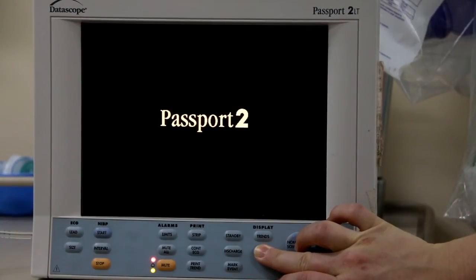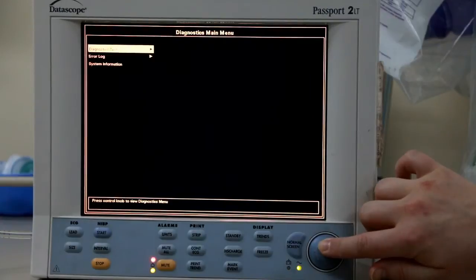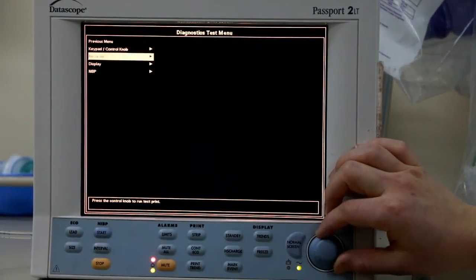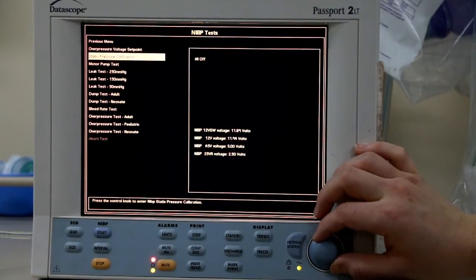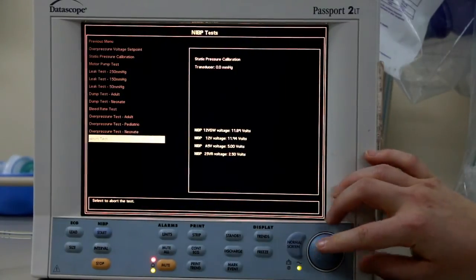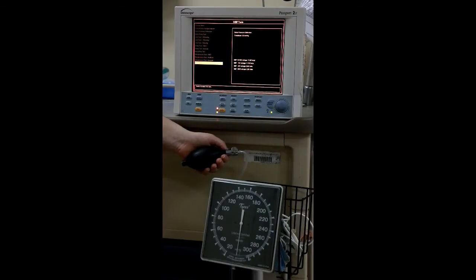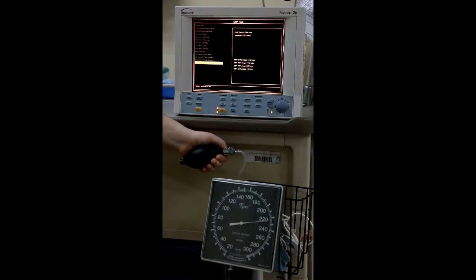Next, turn on the device and immediately hold down the freeze button under display. Press the button until the diagnostics main menu comes up. Then select diagnostic test, choose NIBP, and finally select static pressure calibration. To perform the calibration, squeeze the bulb increasing the pressure to about 280 millimeters mercury. If the automated machine does not read the same pressure as the manometer gauge, then the machine is not calibrated properly and will need to be recalibrated.